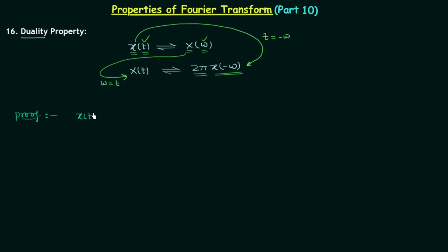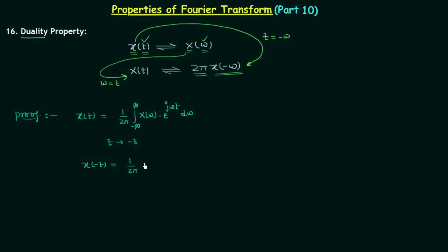So x(t) is equal to 1 over 2π, integration from minus infinity to infinity of X(ω) multiplied by e^(jωt) dω. Now if we replace t by −t on the left-hand side, we have x(−t), and on the right-hand side we have 1 over 2π, integration from minus infinity to infinity of X(ω) multiplied by e^(−jωt) dω.